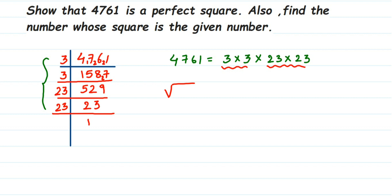Now, how to find the square root? From each pair you take one number. So from this I'm going to take 3, and from this I'm going to take 23. Multiply these two, you will get 69. So the square root of 4761 is 69. So that's it.